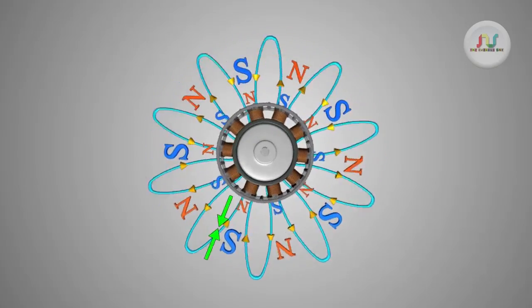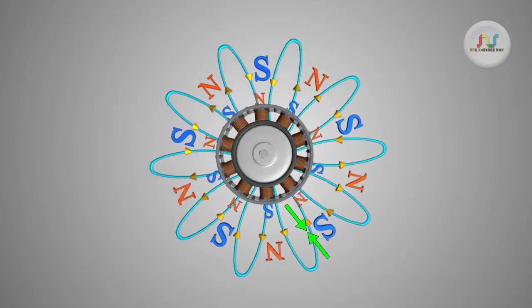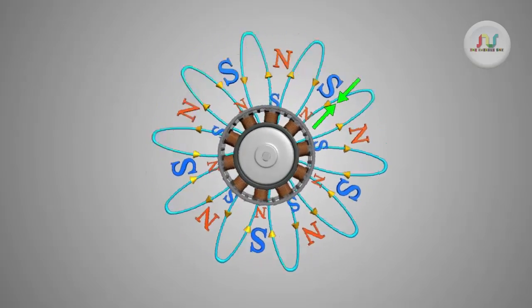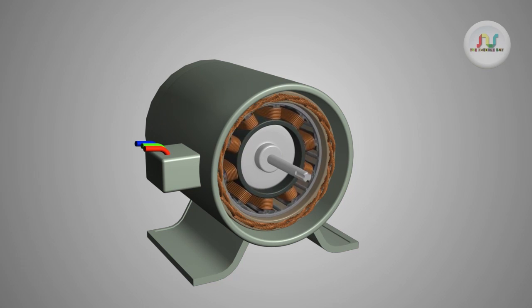When the rotor rotates at synchronized speed, relative motion between squirrel cage and RMF is zero. This means zero force and current on squirrel cage bars. Thus, it will not affect the synchronized operation of the motor.